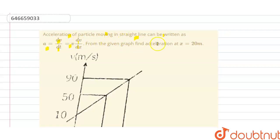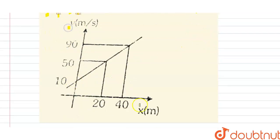From the given graph, find acceleration at x equals 20 meters. So this is a velocity and distance graph. We have the velocity here: 10, 50, and 90, and we have to find at x equals 20.